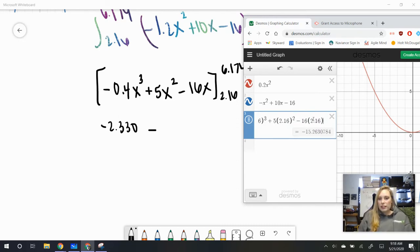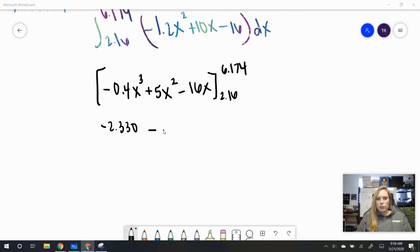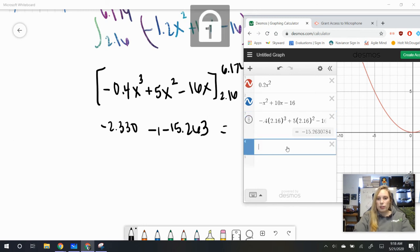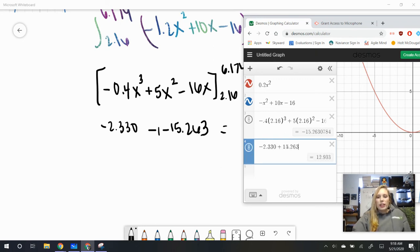Okay, and then we get negative 15.263, so negative 15.263, and then we will actually subtract these. So, this double negative makes a positive, and so we will have negative 2.330 plus 15.263, and we get 12.933.